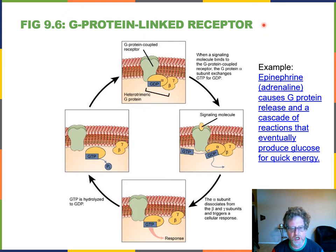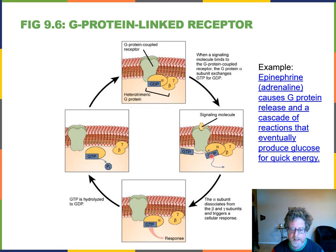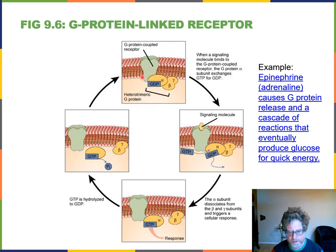G proteins are very common receptors. Instead of having ATP attached, they have GTP. The G protein-coupled receptor sits in the plasma membrane, and a signal molecule — such as adrenaline — binds to it. This alters the G protein: GDP is replaced by GTP, and the subunits move away to trigger a cellular response. It then returns to its original form. A linked video shows how a G protein triggered by adrenaline causes glucose to be released for quick energy.